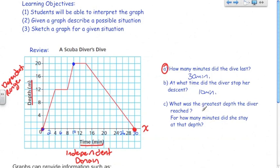C asks, what was the greatest depth the diver reached? Well, we already talked about it. It's right here at 20 meters. And for how many minutes did she stay at that depth? She reached her depth of 20 meters here and then she started her ascent back up to the surface here. That's an increment of 4 minutes because it's from 10 to 14. So, she stayed down there for 4 minutes.